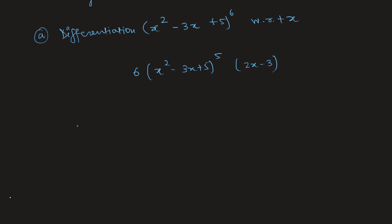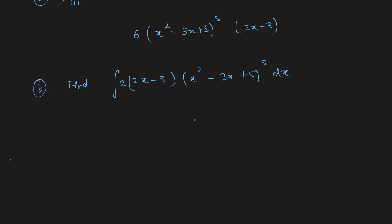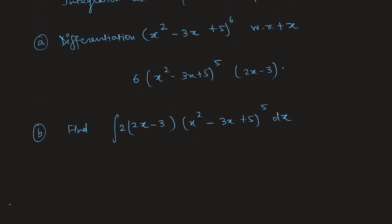Now part B: find the integration of (2x - 3) · 2 · (x² - 3x + 5)⁵ dx. We don't have to use the full substitution method every time — sometimes we just need to observe the expression carefully.